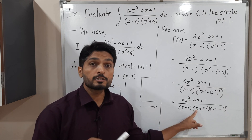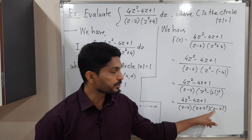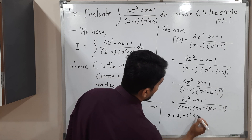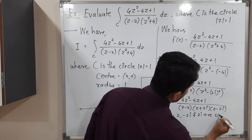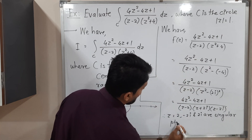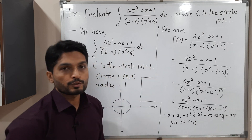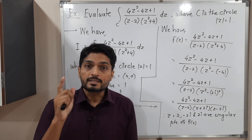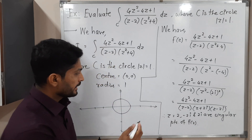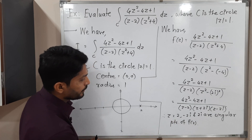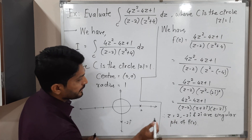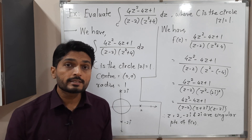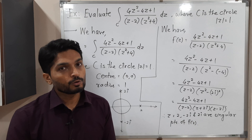So if we put z = -2i, the denominator is 0, and if z = 2i, the denominator is also 0. Therefore, the singular points of f(z) are z = 2, z = -2i, and z = 2i. We have to check whether those points are lying inside or outside the circle. z = 2 lies outside, z = -2i lies outside, and z = 2i also lies outside. So all three singular points are lying outside the circle.